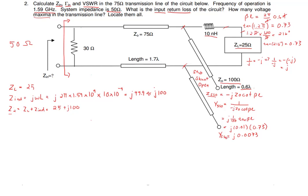Now let's convert Z2 to admittance Y2. That's 1 over Z2, which is 1 over (25 + j100). We convert the denominator to polar form, and the rectangular form comes out as 0.0024 minus j0.0094.